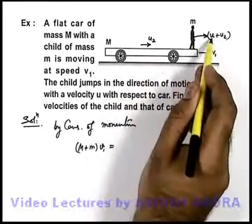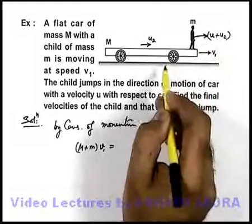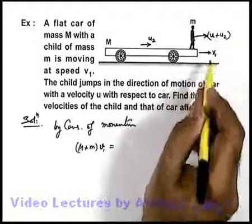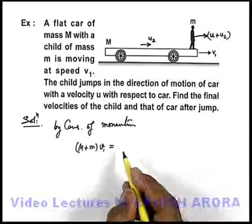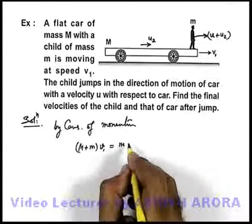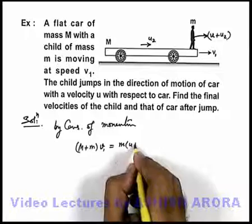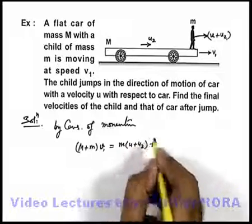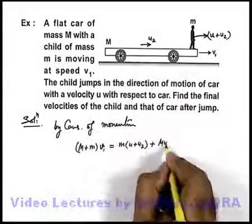And he has jumped off with a speed u with respect to car, so his net speed with respect to ground will be u plus u2. So in this case the momentum of the boy would be small m into u plus u2, plus that of car would be capital M into u2.